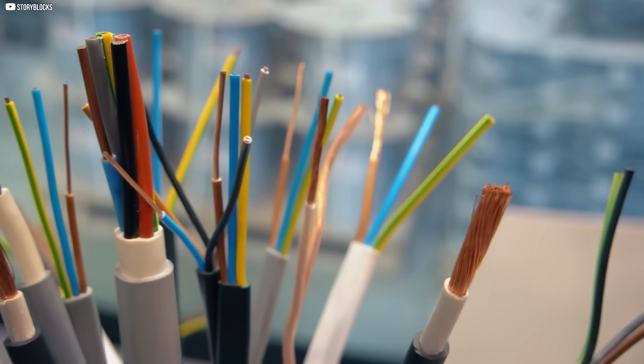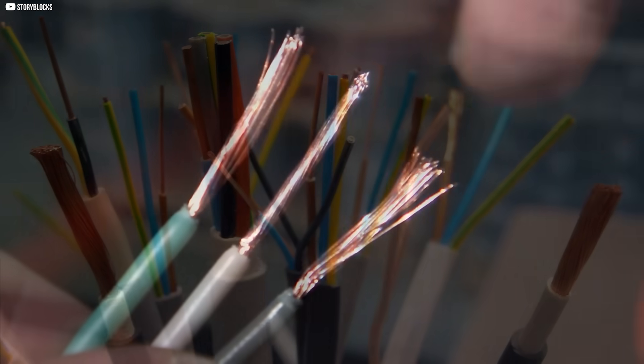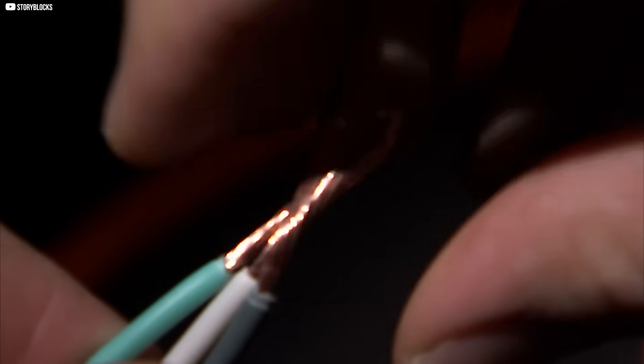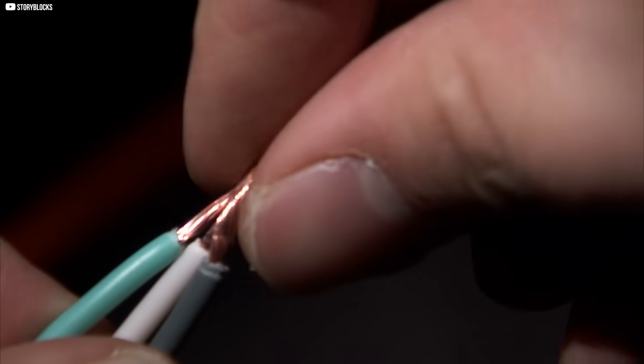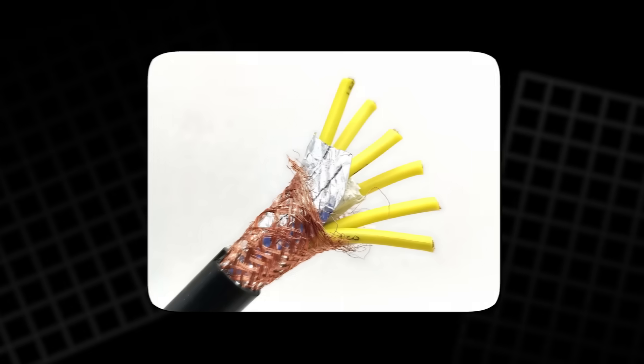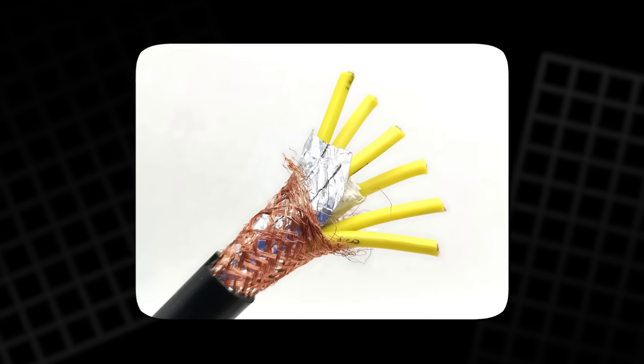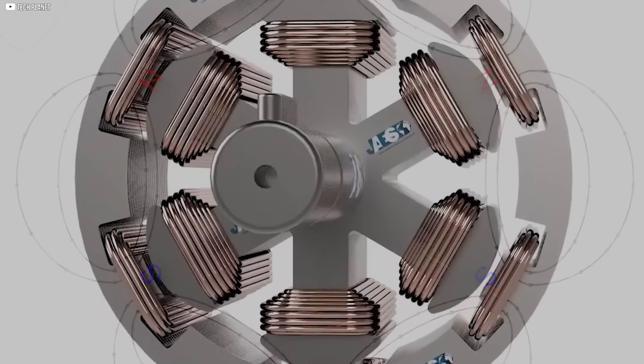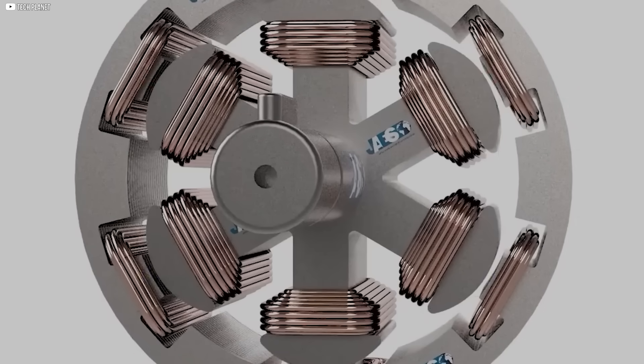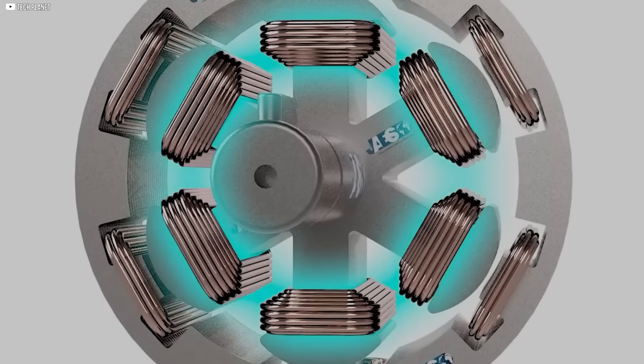Unlike traditional wires, this wasn't rigid. It could bend, twist, and even stretch without losing its ability to conduct electricity. For the first time, researchers were holding a cable that had no metal but behaved like one, and when they built a motor with it, something incredible happened. It worked!